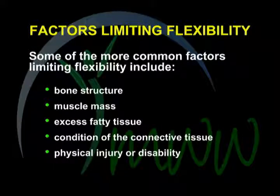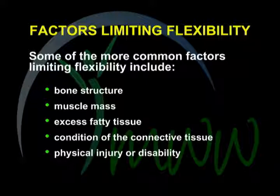Some of the more common factors limiting flexibility include bone structure. Depending on the type of joint involved and how healthy it is, the bone structure of a particular joint places noticeable limits on flexibility. This is why age can be a factor, since older joints tend to be less healthy than younger ones. Muscle mass can be a factor when the muscle is so big that it interferes with an individual's ability to take the adjacent joints through their complete range of motion. For example, large hamstrings limit the ability to fully bend the knees.